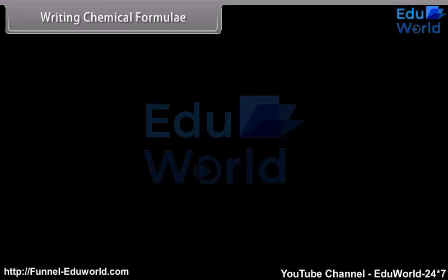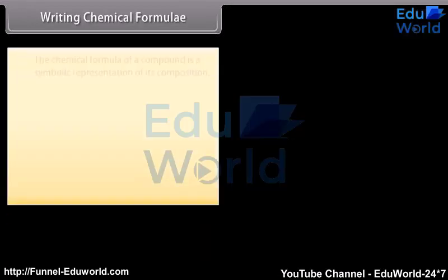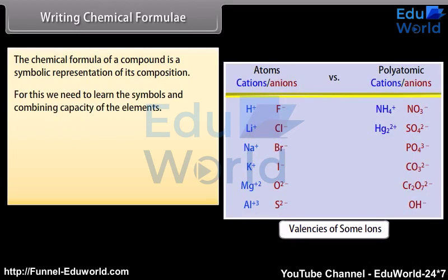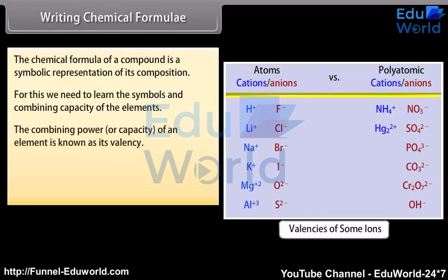The chemical formula of a compound is a symbolic representation of its composition. For this, we need to learn the symbols and combining capacity of the elements. The combining power or capacity of an element is known as its valency.